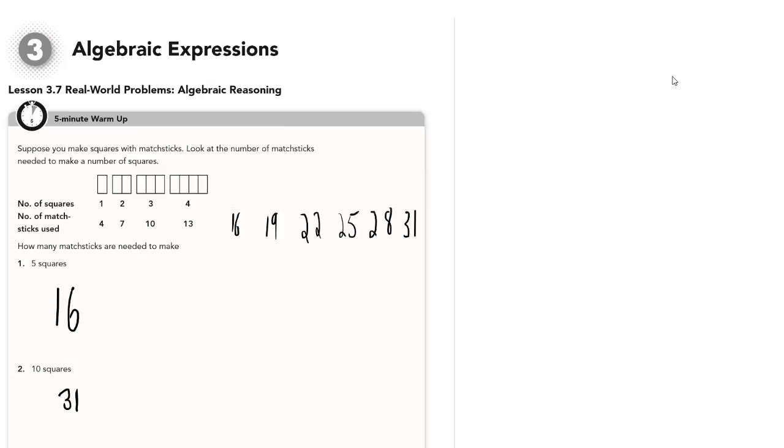But, as I alluded to before, since there's a pattern here, we can come up with an expression that will help us find the number of matchsticks required for any number of squares. What if question two, instead of asking us for ten squares, had asked us for the number of matchsticks required to make ninety squares? I know I wouldn't have wanted to continue this pattern out until I got to ninety, especially when there's an easier way.